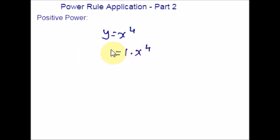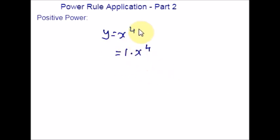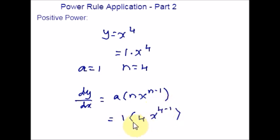Remember, we can always multiply something by 1 and keep it the same, so the function can be written as 1 × x⁴. When the coefficient is absent, it is assumed to be 1, not 0 — if it were 0, the whole function would be 0. Using 1 × x⁴, we can apply the power rule: a = 1 and n = 4. Applying the derivative formula gives 4 − 1 = 3, so the derivative of y = x⁴ is 4x³.